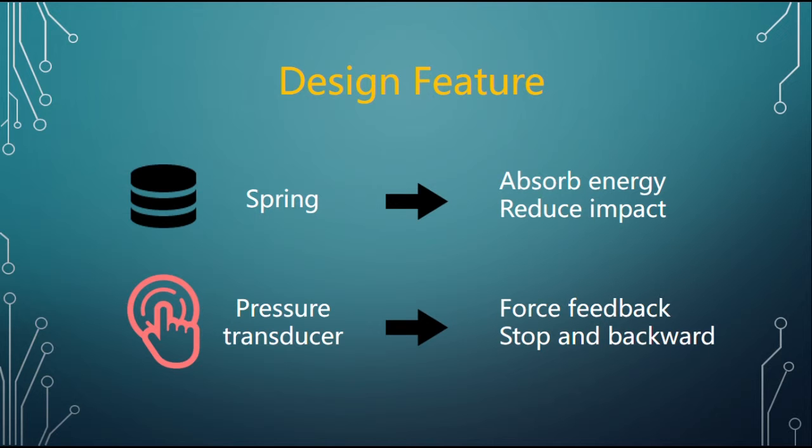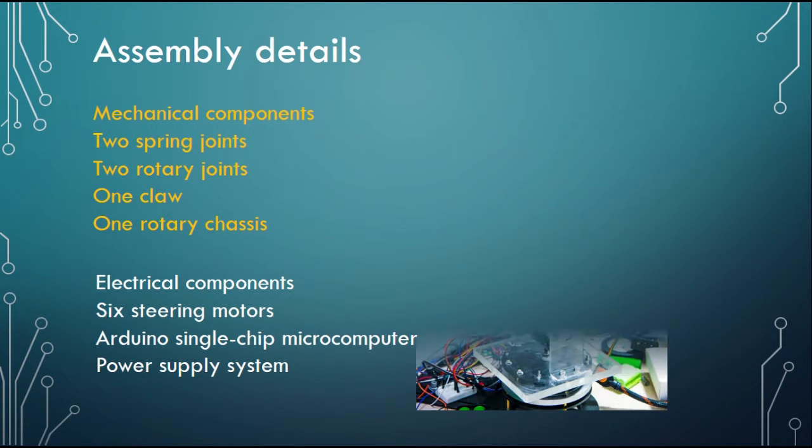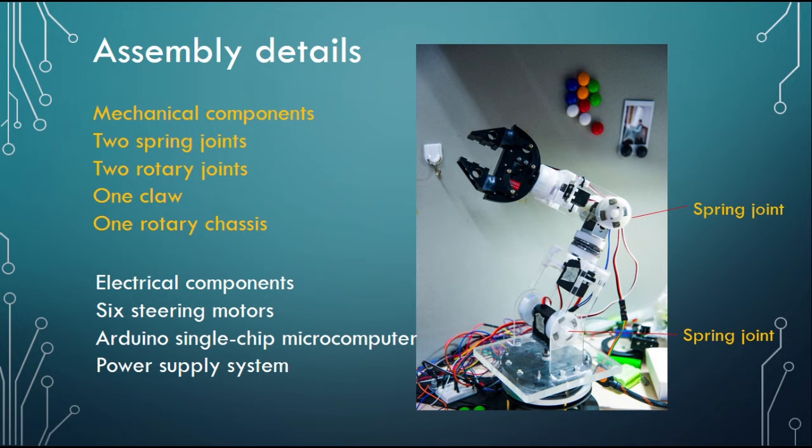The pressure transducer will detect the collision force and make the manipulator stop and move backward slightly. Two spring joints, two rotary joints, one claw, and one rotary chassis are used to form this manipulator with five degrees of freedom.